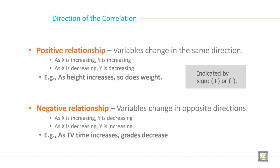Direction of the correlation. Positive relationship: Variables change in the same direction, or it is also called direct correlation. As X is increasing, Y is increasing. Both are going in the same direction. As X is decreasing, Y is decreasing. Example: height increases, so does weight. This is indicated by a plus sign for positive correlation.